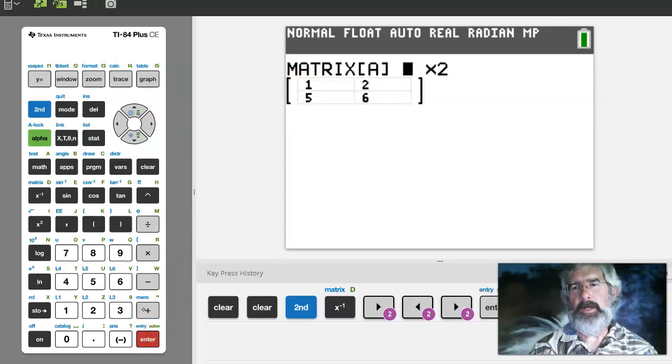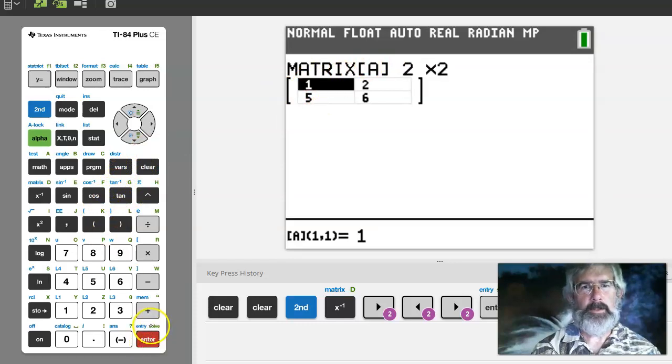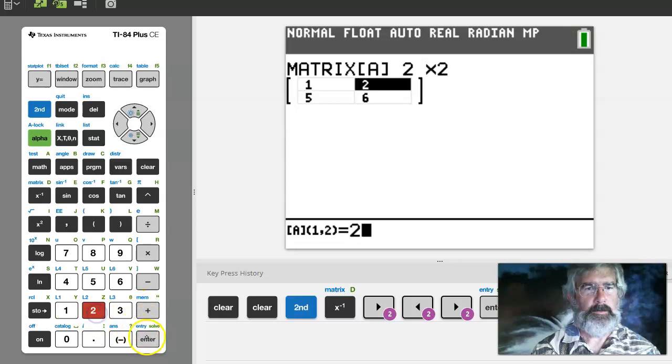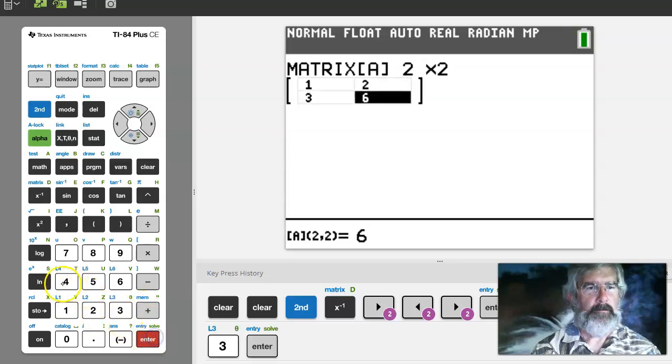At the moment it's saying I got a 2 by 2 matrix. If I want to change this, let's stick with 2 by 2. So 2 by 2, just enter enter, and then we can put in the things we want.